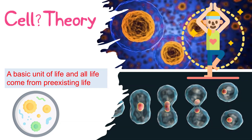It all started when Theodor Schwann and Matthias Schleiden proposed the cell theory in 1839, where the cell is the basic and functional unit of life, and where all living things revolve around being composed of one or more cells.